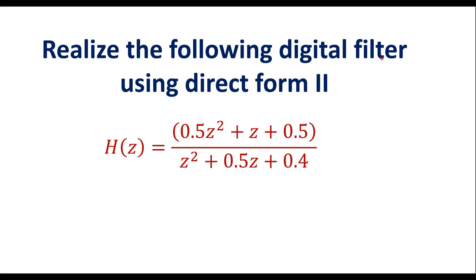Realize the following digital filter using Direct Form 2. The digital transfer function H(Z) is given. We are supposed to realize it using Direct Form 2. We can observe that the powers of Z are positive values, so first we will convert the powers of Z to negative values.